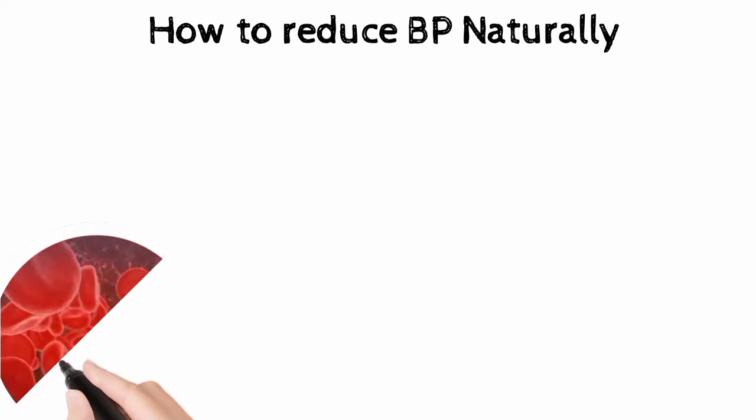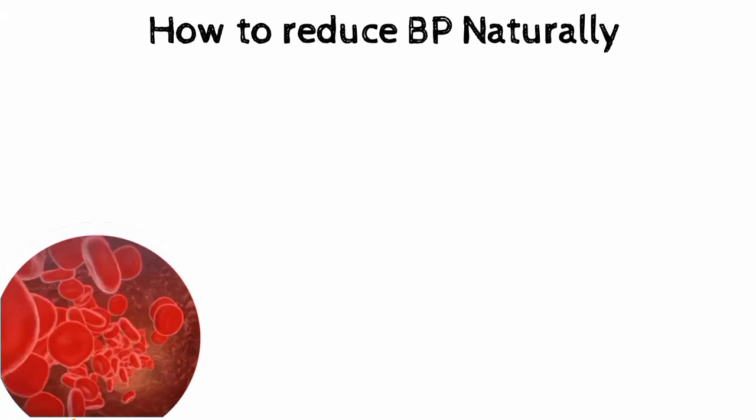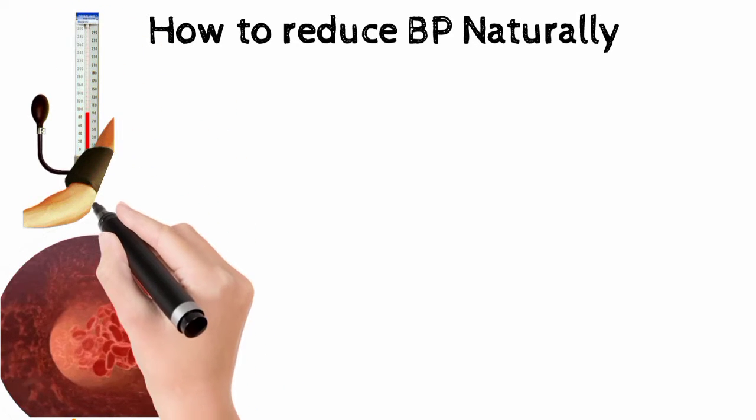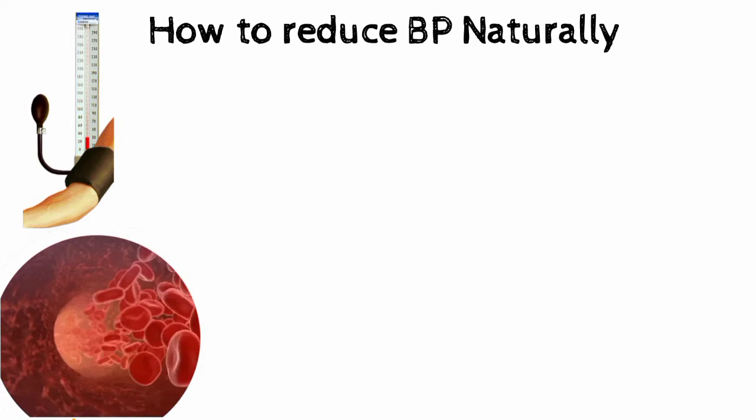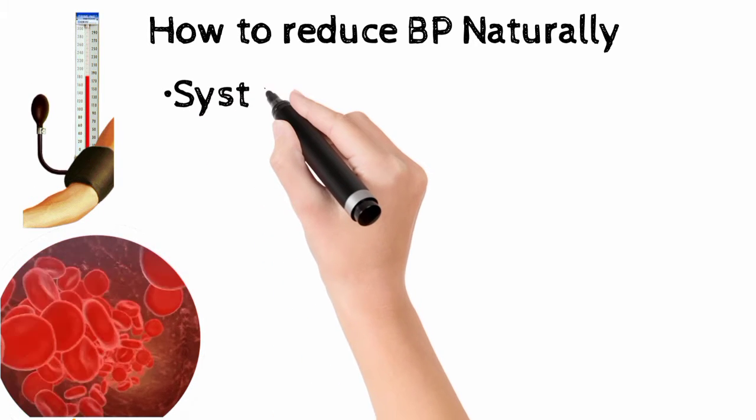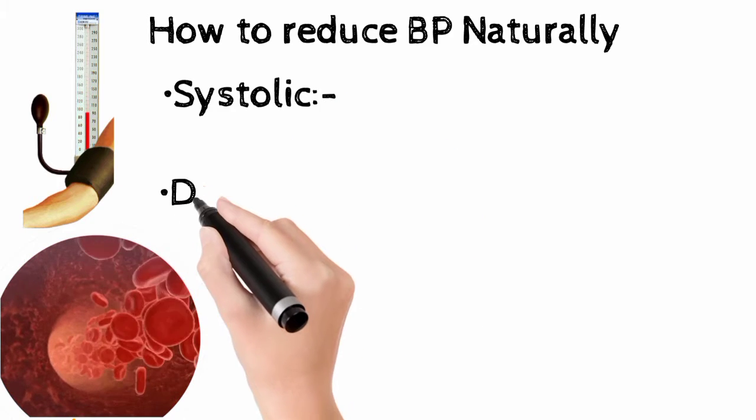Blood pressure is the pressure which blood exerts on the blood vessels. Blood pressure is measured using sphygmomanometer and it shows two readings of blood pressures. One is systolic blood pressure and the other is diastolic blood pressure.